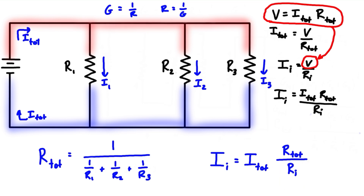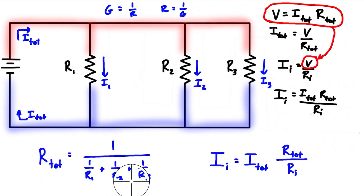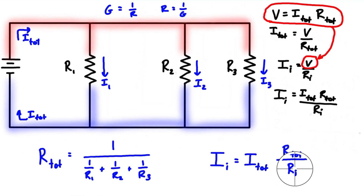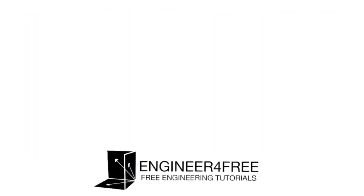So that's how you derive the current divider formula, and that's how you derive the total resistance formula from the total conductance formula. I hope this video helps, and I'll see you in the next video where I'll go over an example of a current division problem with parallel resistors.